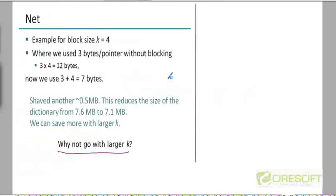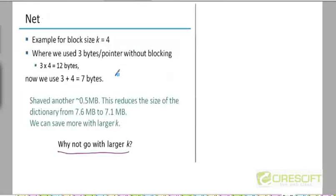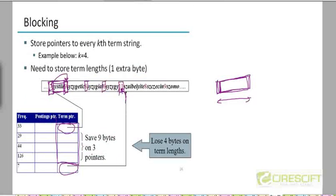By doing that, we end up saving some more space. With k equal to four, we ended up saving 0.5 megabytes more. Note that we've done two things: we first represented all the terms by this global string — that achieved the first level of compression. And then we are further compressing by adding blocking.